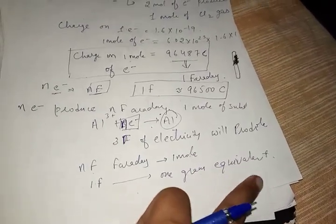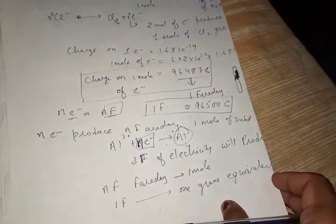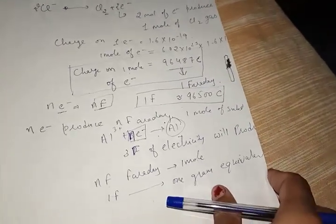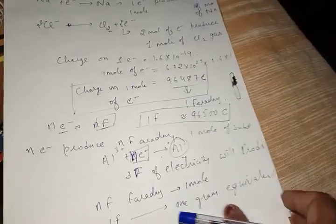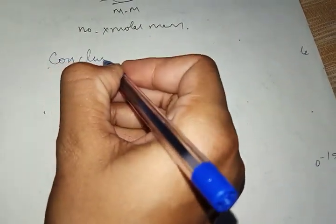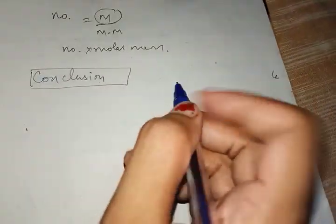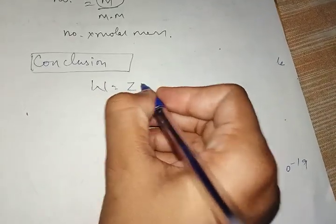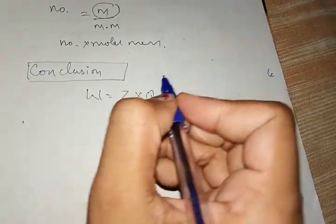The gram equivalent weight equals atomic weight divided by the number of electrons lost or gained. From this conclusion, all Faraday's law questions can be solved. The formula is W = Z × Q, and since Q = I × T, we also have W = Z × I × T.